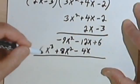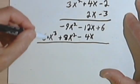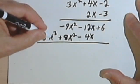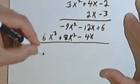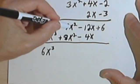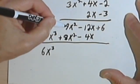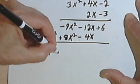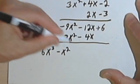And now, just like in regular multiplication, I'm going to add each column. So adding the x to the third column, I get 6x to the third. I go on to the x squared column, I've got a negative 9 and a positive 8, so that's going to be a negative 1. So this is just negative x squared.